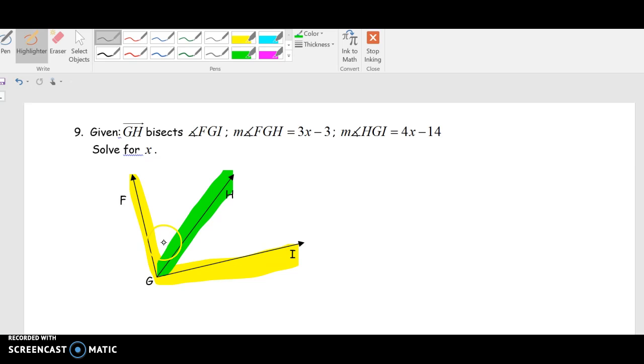If GH bisects, what you have to understand is you get two congruent angles out of this. Now, they tell you FGH, this angle here is 3X minus 3, and HGI, they tell you, is 4X minus 14.